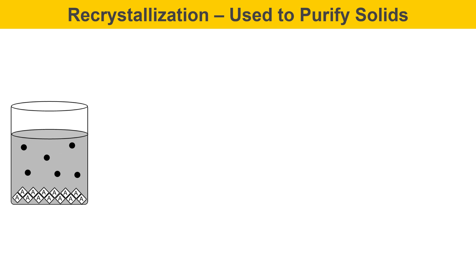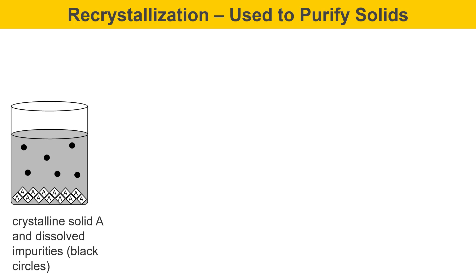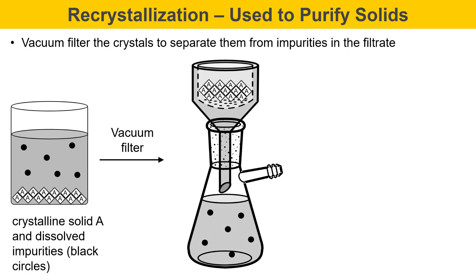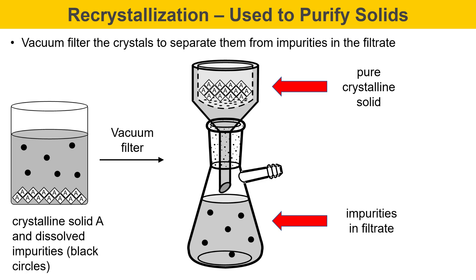So at this point, we have crystalline solid A and dissolved impurities in solution. Now I'm going to vacuum filter these crystals to separate them from the impurities in the filtrate. Upon vacuum filtering, the pure crystalline product ends up in the filter, and the impurities end up in the filtrate. This is how impurities are separated — they're filtered away.